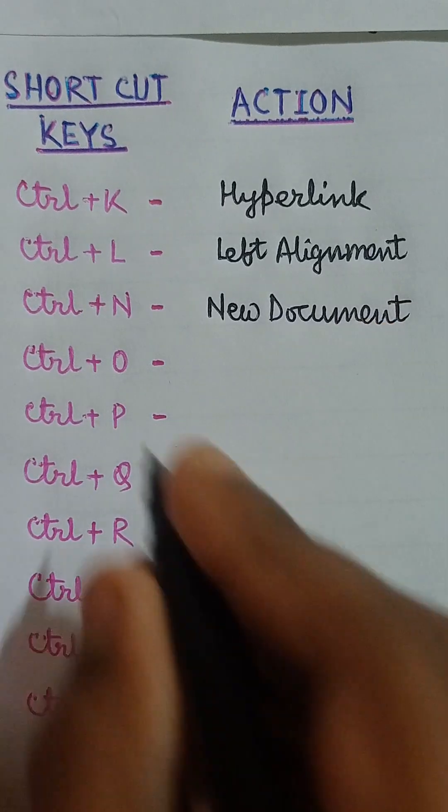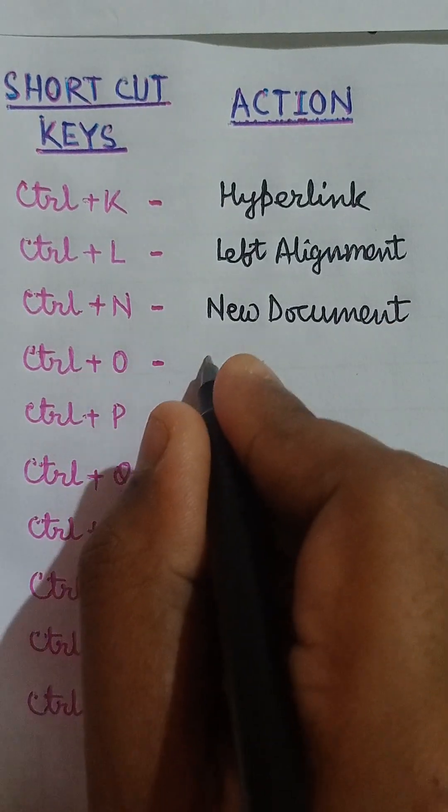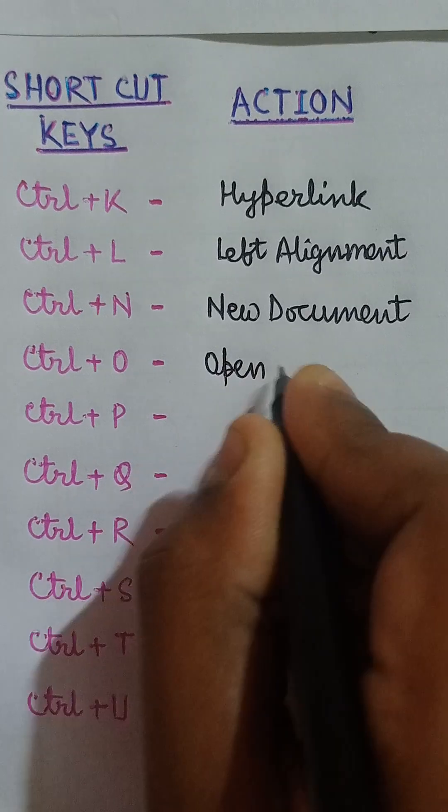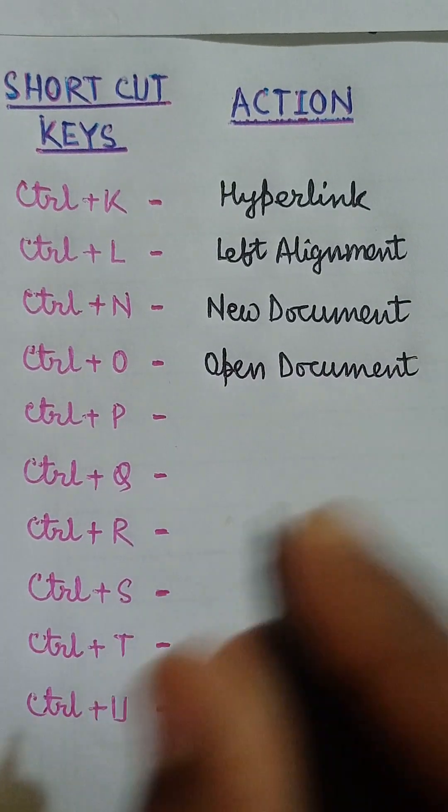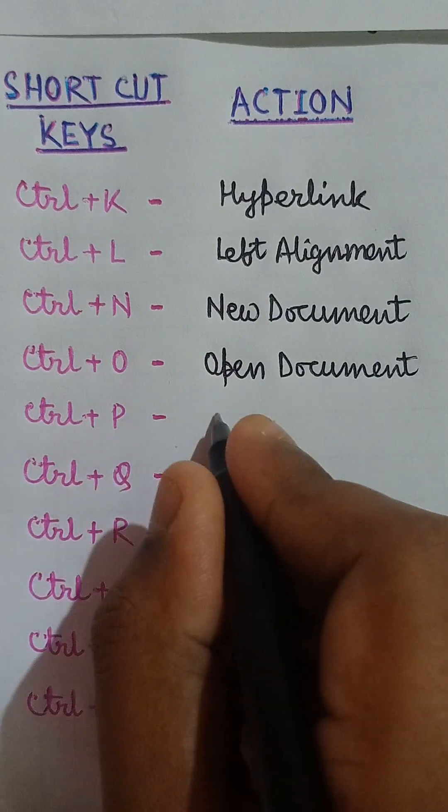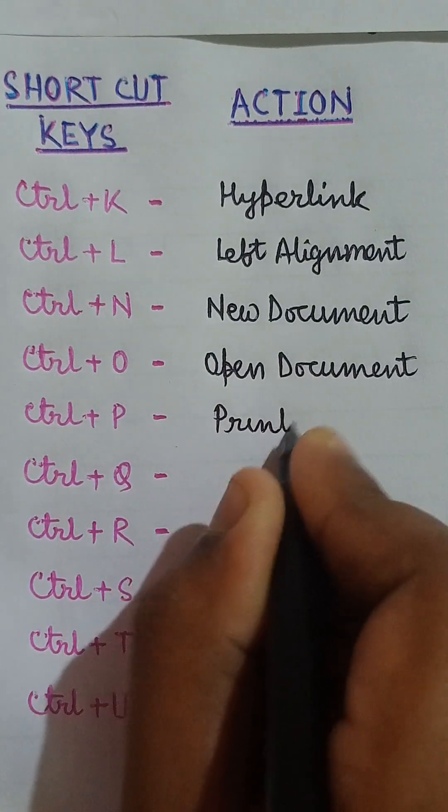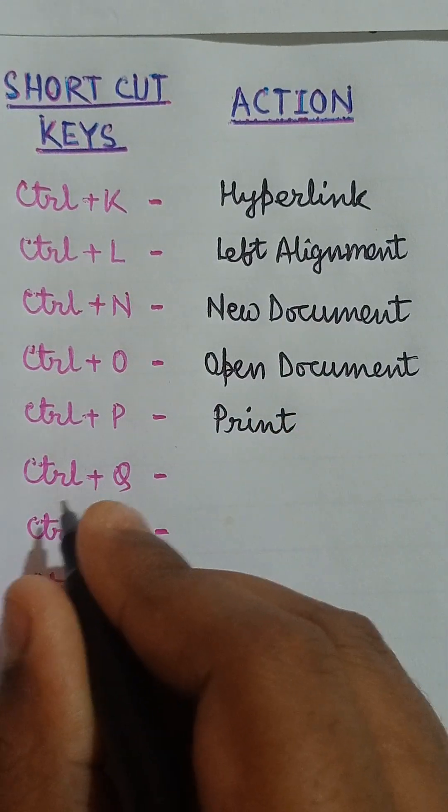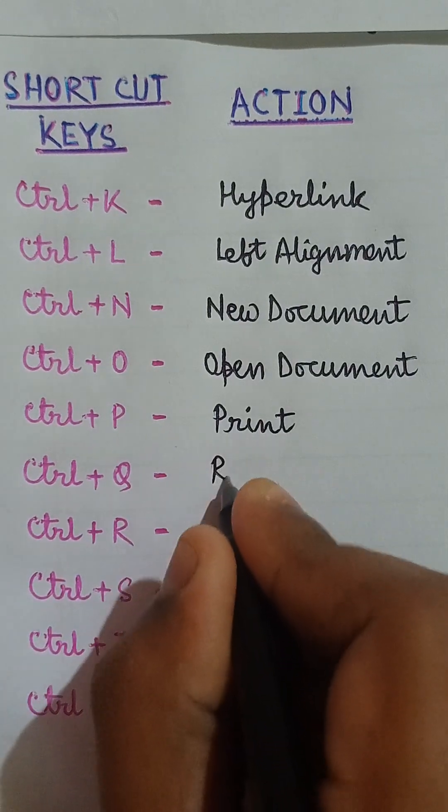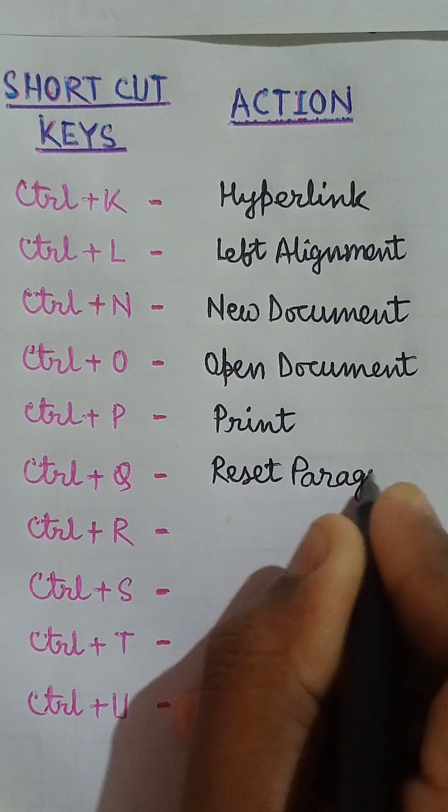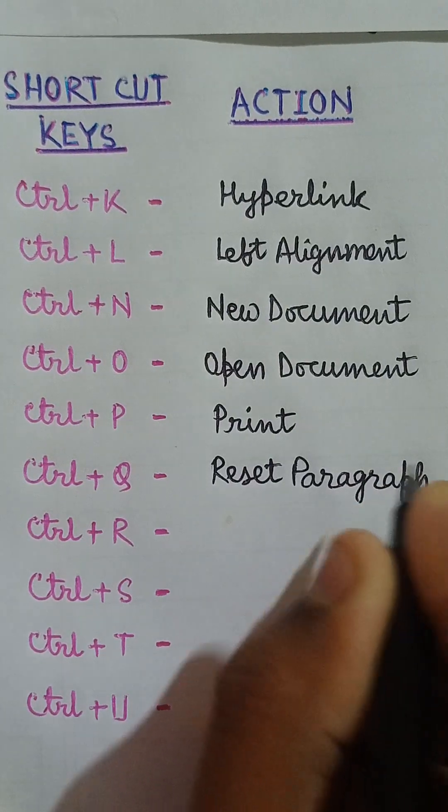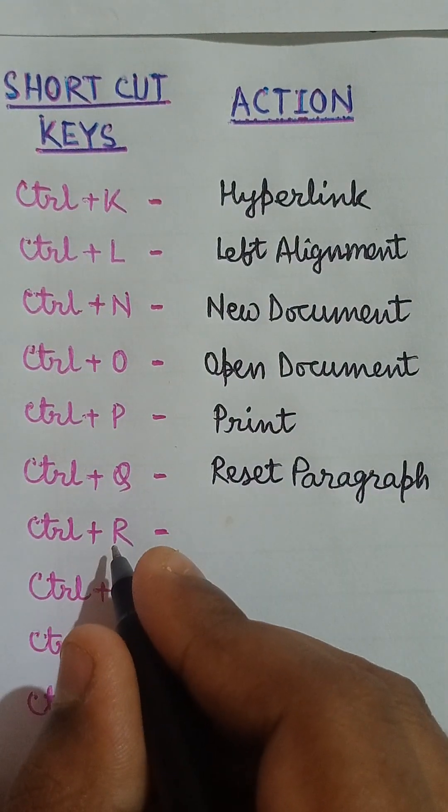Ctrl+O open document, Ctrl+P print, Ctrl+Q reset paragraph, Ctrl+R right alignment.